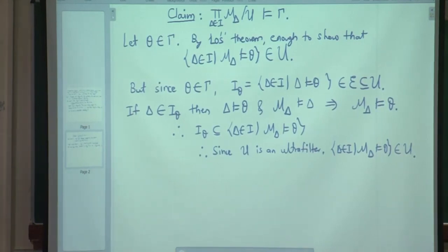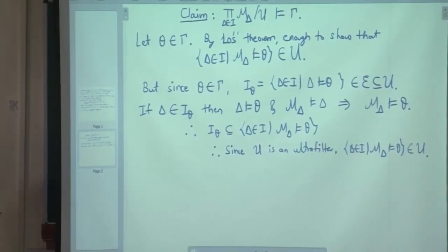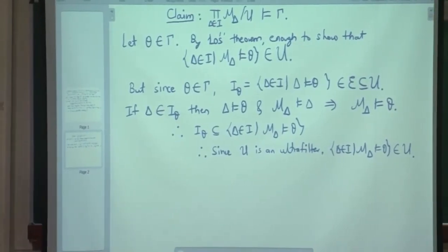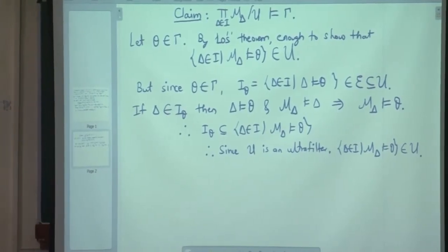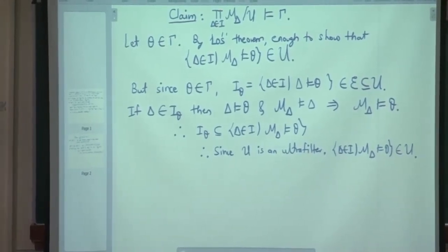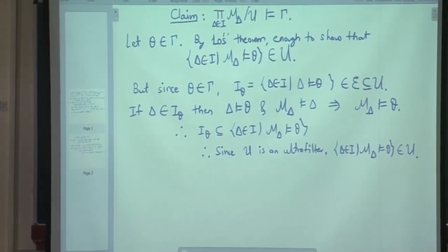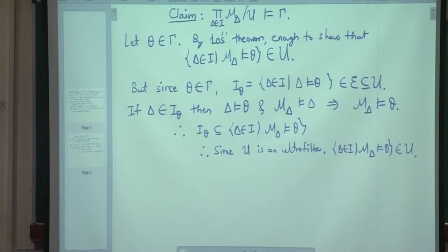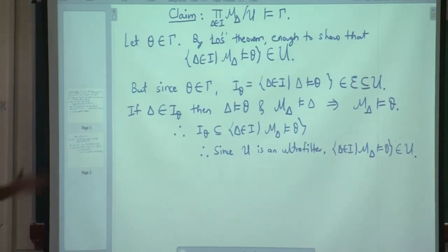This is the famous compactness theorem. The original proof that Gödel had was using his completeness theorem — just the way we did it for propositional logic, he wrote the same proof for predicate logic. Because we have not covered the completeness theorem, we only saw the semantic version of the compactness theorem.